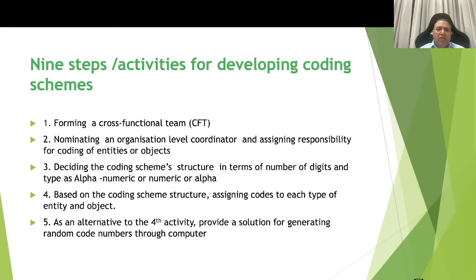Step 3 is deciding the coding scheme structure in terms of number of digits and types, whether alpha, numeric, or alphanumeric. This I will explain with a few examples. Step 4: Based on the coding structure, assign codes to each type of entity and object. As an alternative, step 4 activity provides a solution for generating random code numbers through computer. For example, in the case of materials, the code numbering could start from 1, 2, 3, 4 and so on, but there are solutions available where this numbering can be generated randomly by the computer.